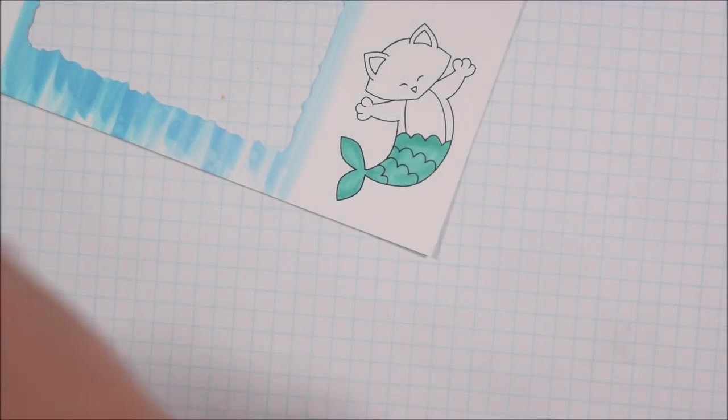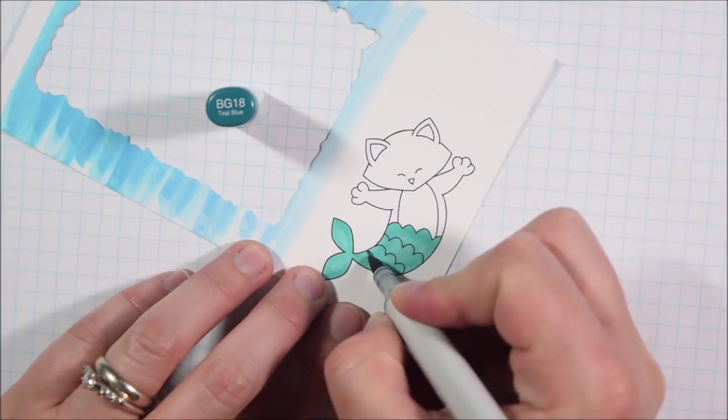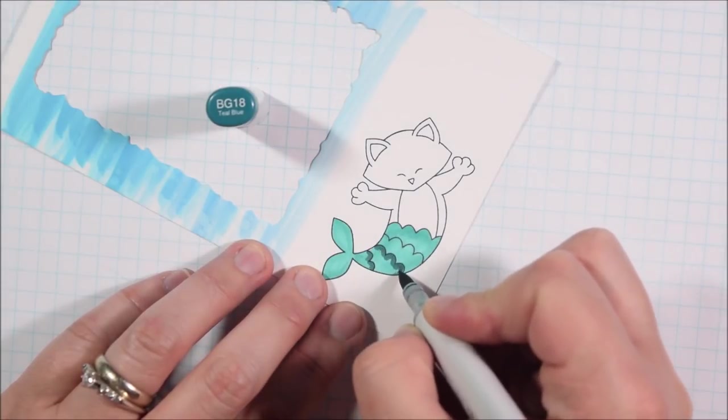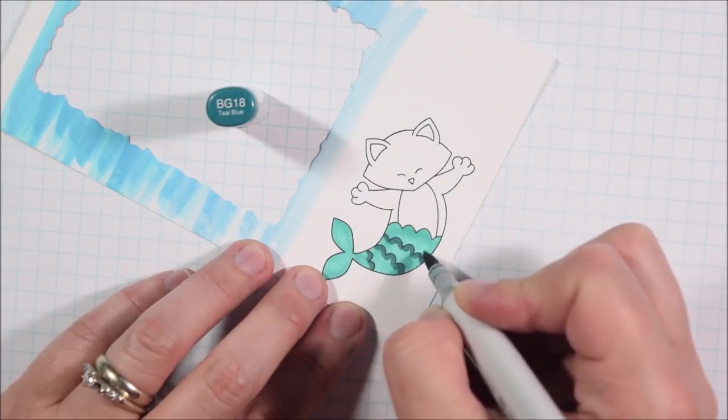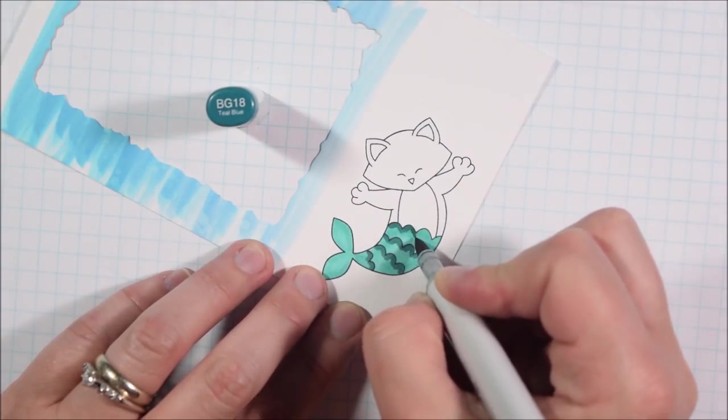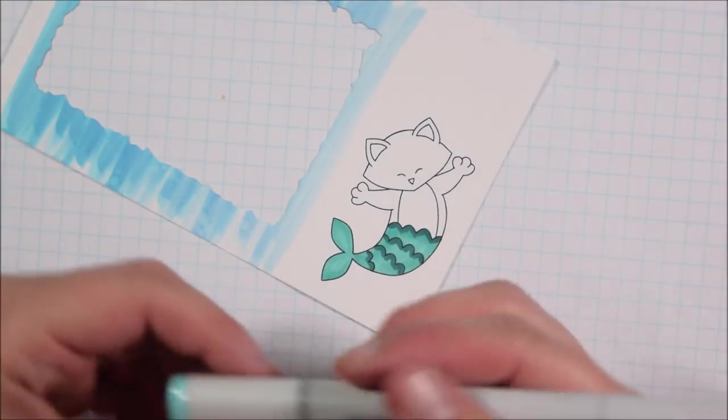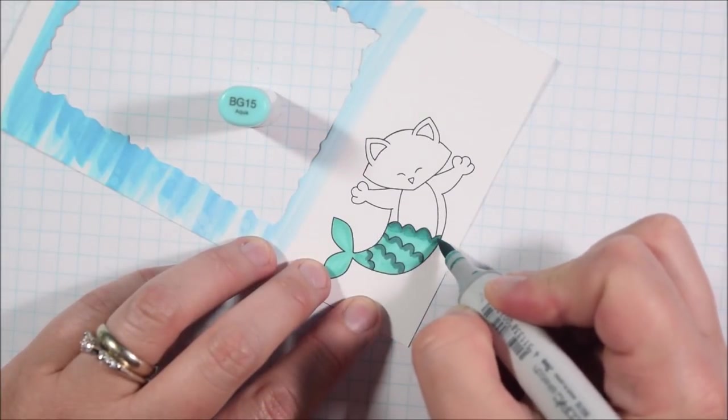Next up I am coloring the mermaid Newton and I'm just actually coloring him on the scrap of paper that was left as I created my background. So you can see that background we just created is cut out and I'm coloring him with BG13, 18 and 15. This is one of my favorite teal combinations and one that I find I use a lot.